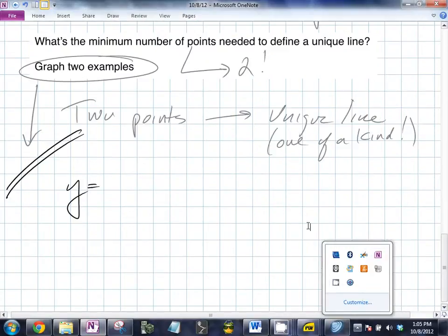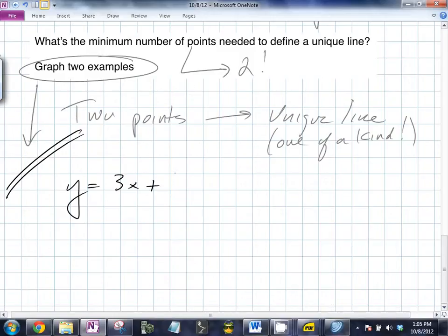3x plus what? 16. So if we wanted to graph that, how many points are we looking for? Need just 2 points. What's the easiest point to get? Y-intercept. What is the y-intercept? Someone tell me. Zero comma 16. I like it. Zero comma 16. I like that. So let's graph that one point.